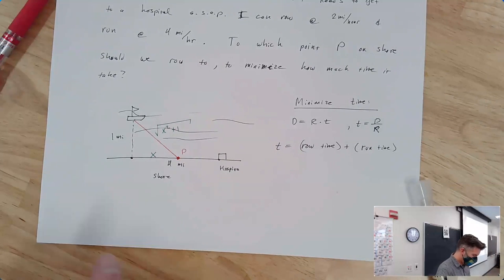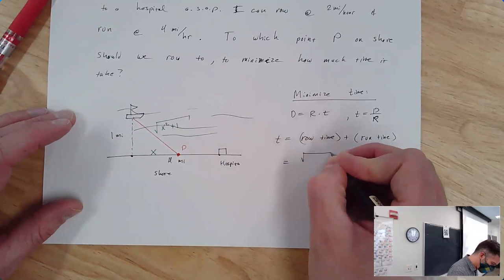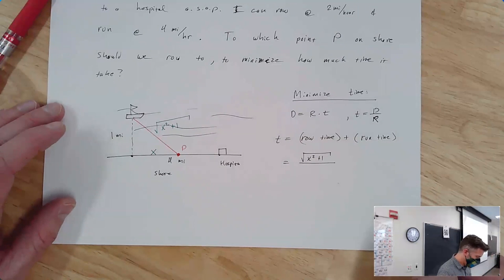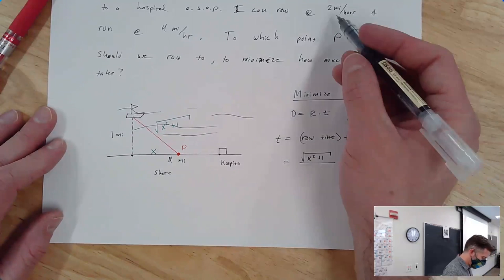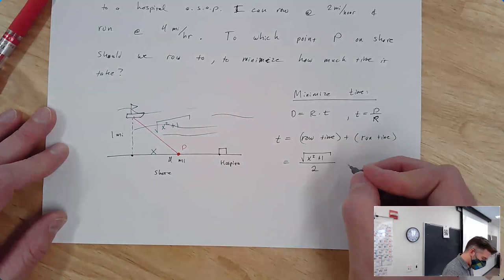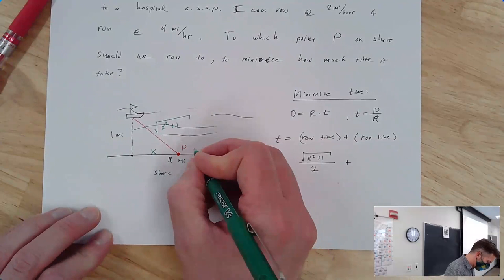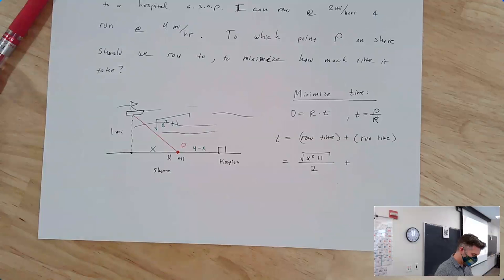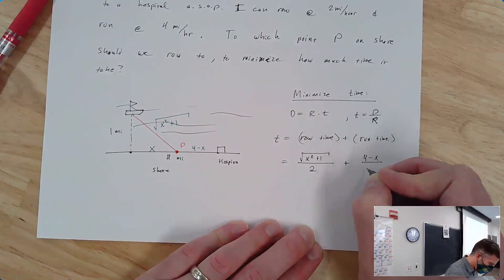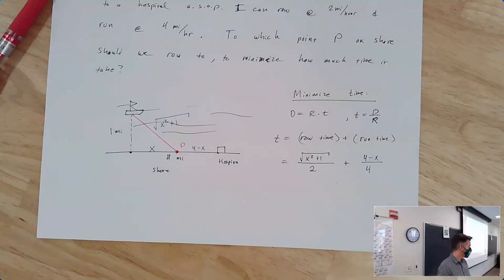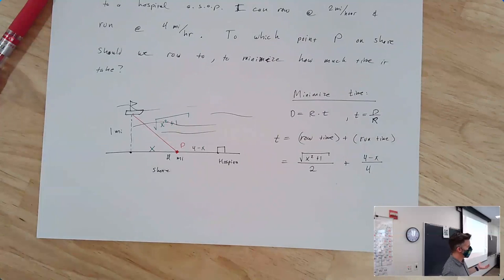The row time is the row distance over the row rate: square root of x squared plus 1, divided by 2. The run time is the run distance over the run rate: 4 minus x divided by 4. Total time as a function of x is one half times the square root of x squared plus 1, plus 1 minus one fourth x. This gives us a function of one variable to minimize.